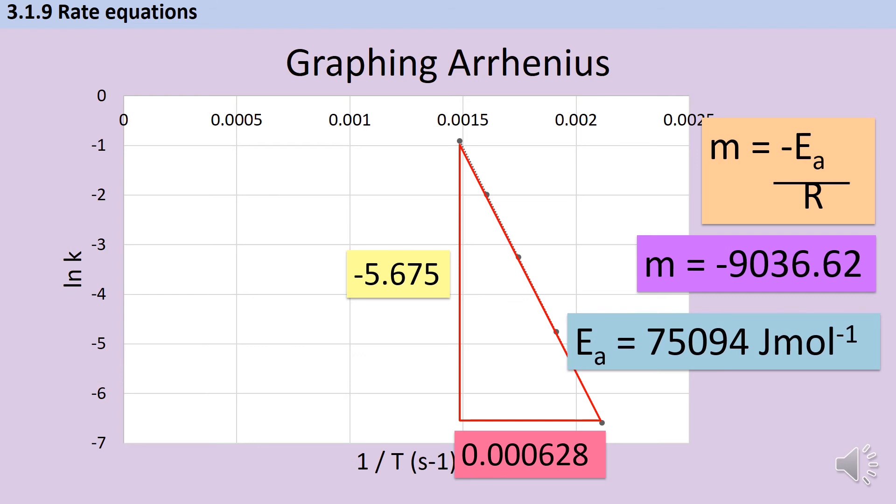Then of course, I want to take account of the fact that it's normal to report activation energies in kilojoules per mole rather than joules per mole. So I need to divide by 1,000, and also I want to reduce my answer to an appropriate number of significant figures.